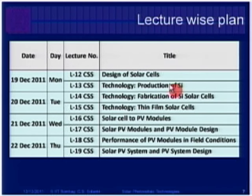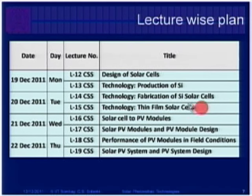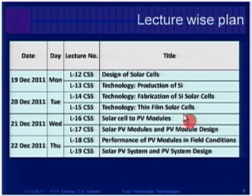Then we move on to the technology side — fabrication, how a solar cell is fabricated, and how thin film technology differs from crystalline silicon wafer-based technology. You may have heard of thin film solar cells versus crystalline silicon solar cells. After that, solar PV modules — how individual solar cells are used to make a module, how cells are connected, and how to design a module to get a given amount of current, voltage, and power.